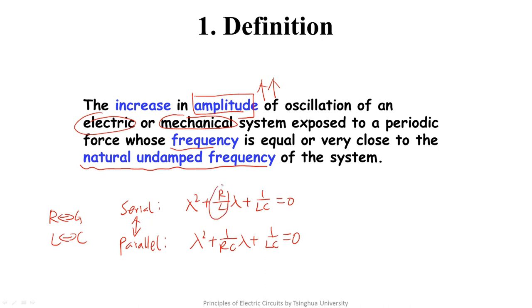We define this part as 2 times alpha, in which alpha is the decay coefficient. We define this part as the square of omega 0, in which omega 0 is the undamped angular frequency. Omega 0 equals 2 pi times F0. F0 is the natural undamped frequency in the definition.